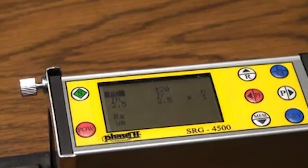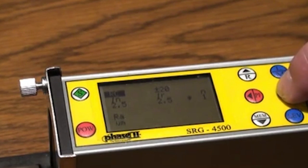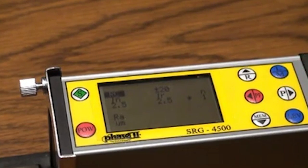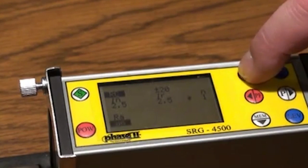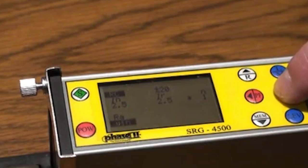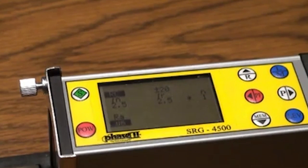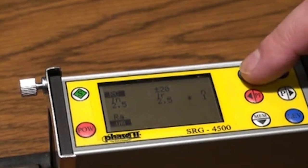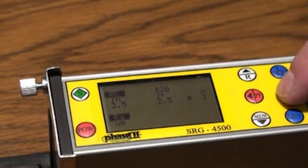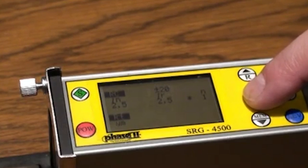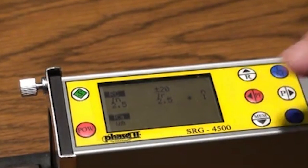From the quick menu screen, we can change the filter, of which RC is default. We can change the measuring unit, inch or metric. We can change roughness parameter, which is usually determined by your requirement. If no parameter is called out on a drawing, it usually defaults to RA.